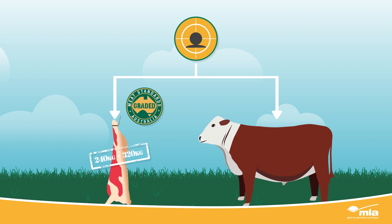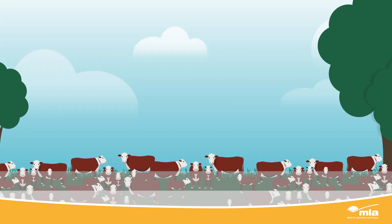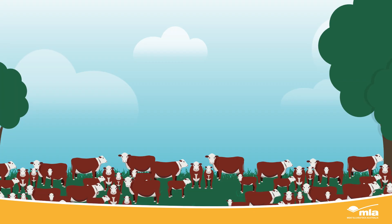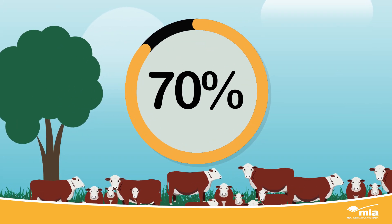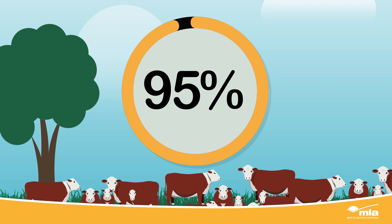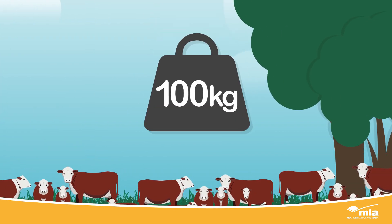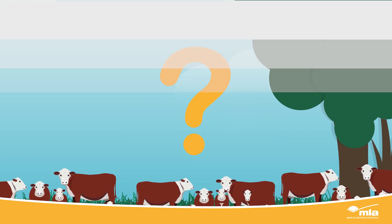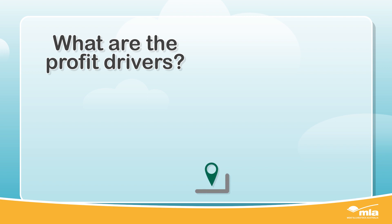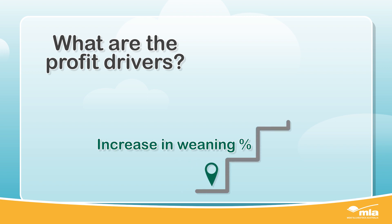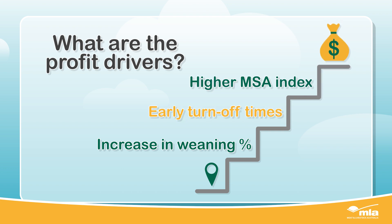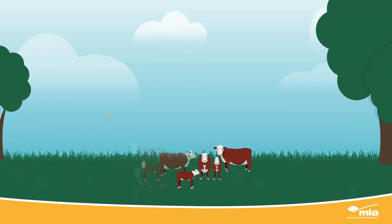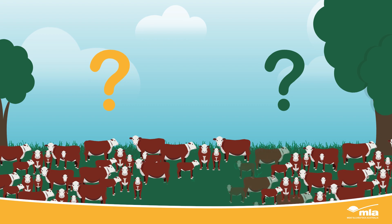What does your target market require — MSA graded steers at 240 to 320 kilograms dressed, or feedlot steers at 350 to 450 kilograms? Where is your herd at right now? Is your average weaning percentage 70%, 80%, or 95%? Is your average weaning weight 100 kilograms or 300 kilograms? How heavy are your cows? What are the profit drivers — an increase in weaning percentage, early turnoff times, or a higher MSA index?